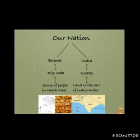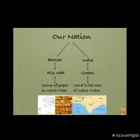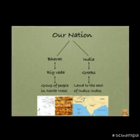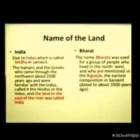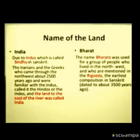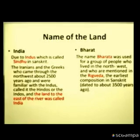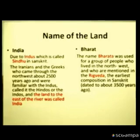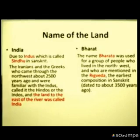They enriched their culture by sharing ideas with others — that is the reason they were migrating. Next, you are going to see the name of our nation. A country's name — usually here we say Bharat and India. Bharat comes from the Rig Veda period. India comes from the river Indus, which is called the Sindhu in Sanskrit. The Iranians and the Greeks who came through the north-west about 2,500 years ago were familiar with the Indus and called its people Hindus, and that is why India got its name.